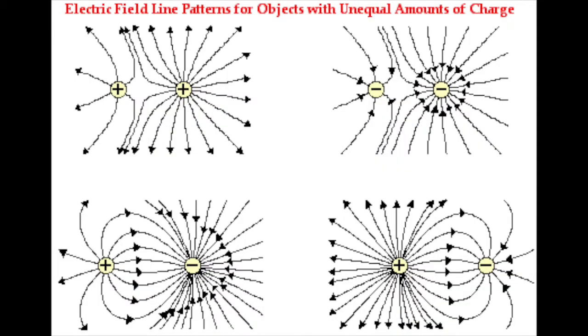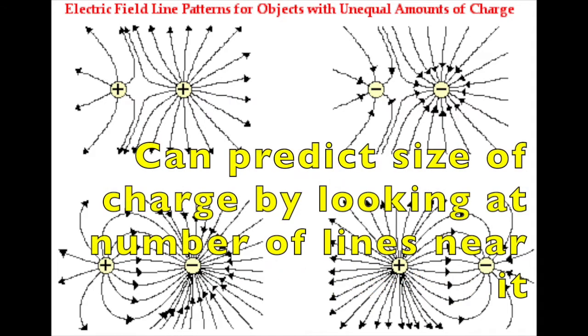So if I gave you electric field line drawings and I didn't tell you what the magnitude of the charges were in the drawings, you could still make a guess about where the bigger charges were based off of the charges that have more lines going into or coming out of them. This is called Gauss's Law, which you can figure out the magnitude of a charge simply by looking at how many lines are headed towards it or coming away from it.